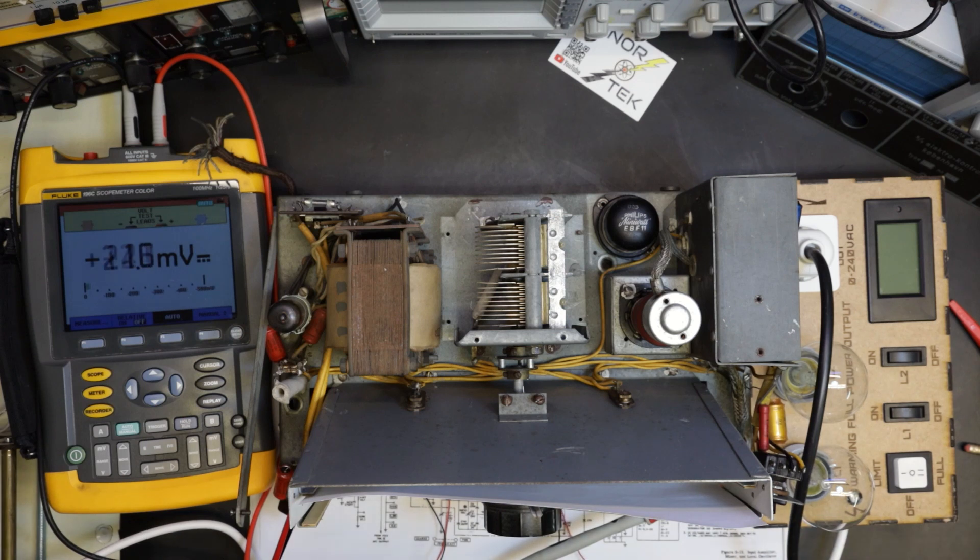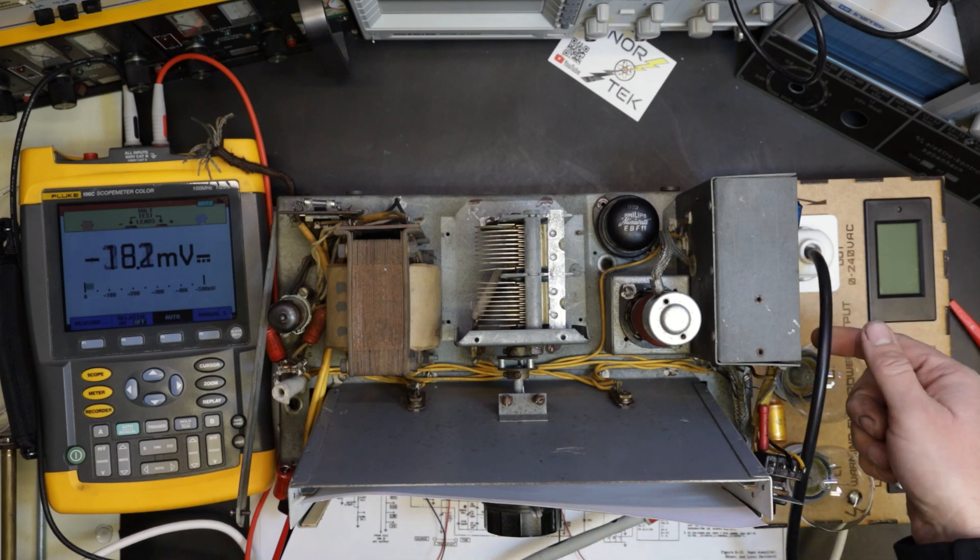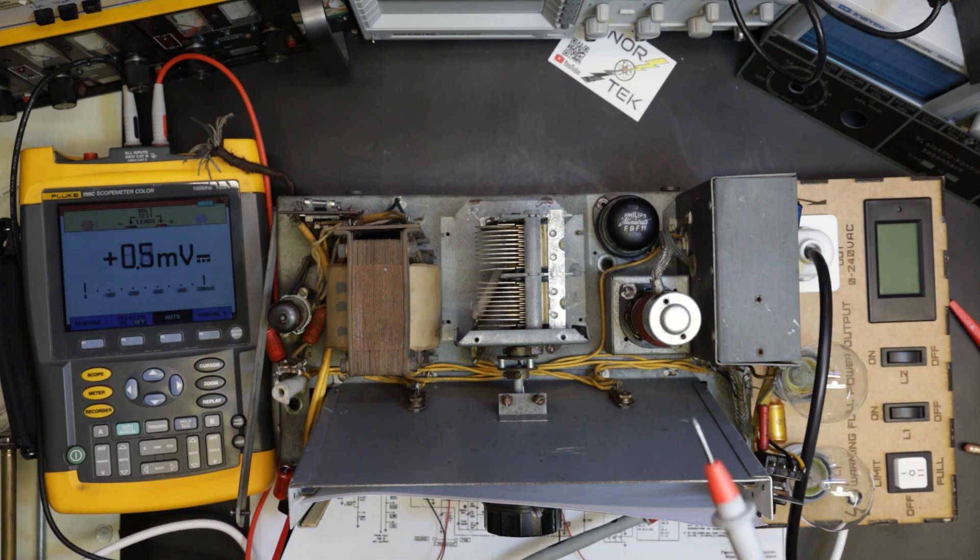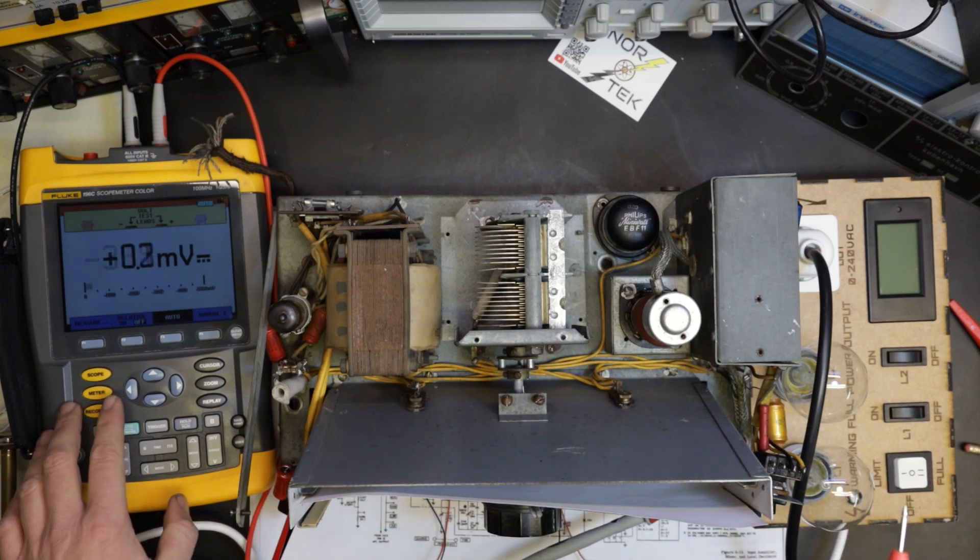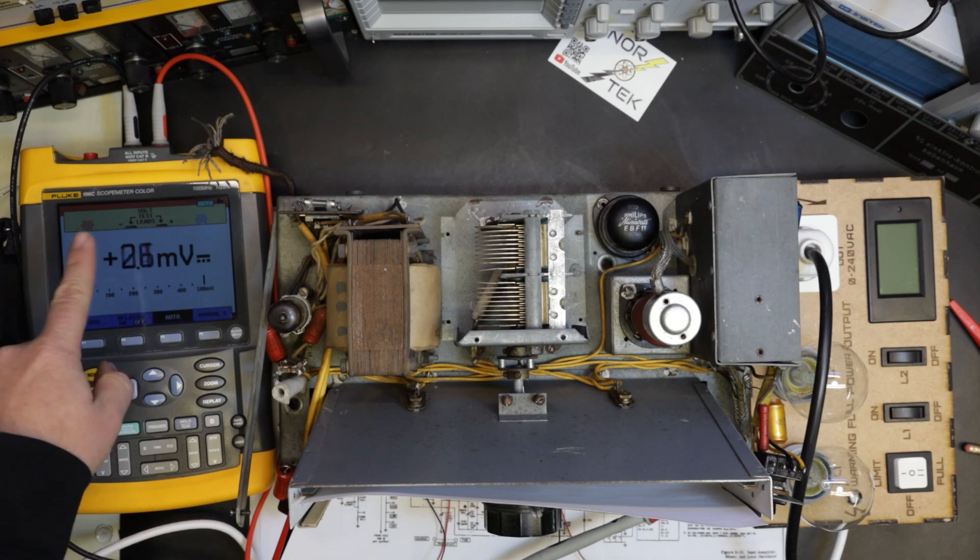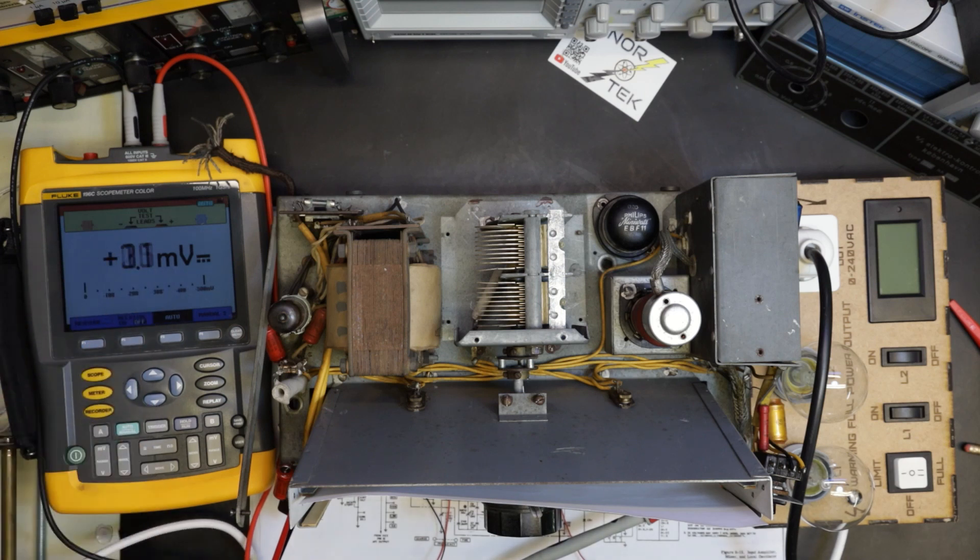I have hooked my frequency generator to the dim bulb tester, and it's hooked up to my isolation transformer. I will show you with my Fluke 196C ScopeMeter here